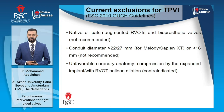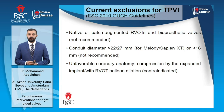Absolute contraindications to transcatheter pulmonary valve implantation include unfavorable coronary anatomy with compression of the coronaries during RVOT balloon dilatation, active infection, and occluded central veins.